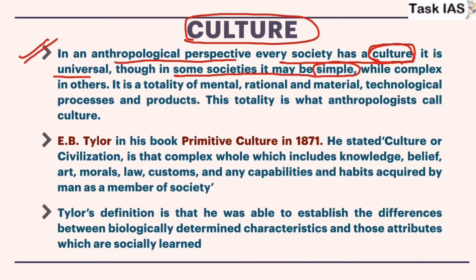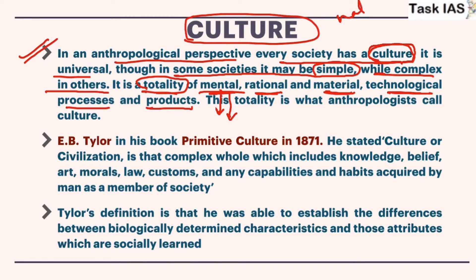While complex in others, culture is a totality of mental, rational, material, and technological processes and products. So it includes how our belief system and attitudes work — mental, material, technological, everything is included in the definition of culture. That means it includes material as well as non-material parts. This totality is what anthropologists call culture.